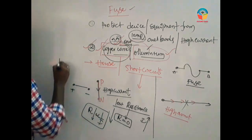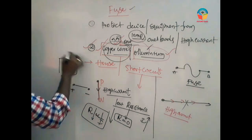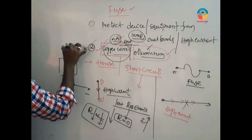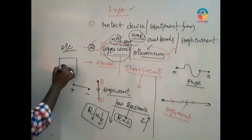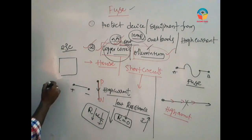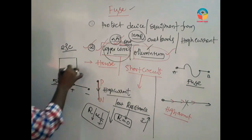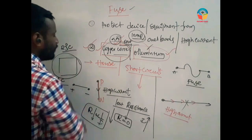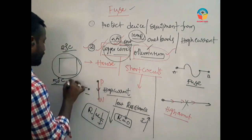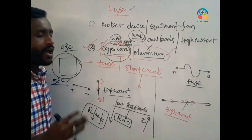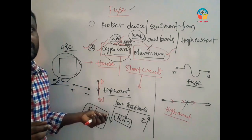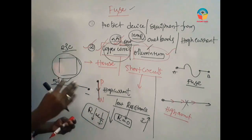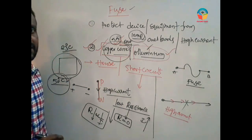For example, there is a device. Under surrounding conditions, the material is in a solid state. When the temperature rises and crosses the melting point — for example, at 50 degrees centigrade — the material changes from solid state to liquid state. Because the temperature crosses the melting point, it becomes liquid.